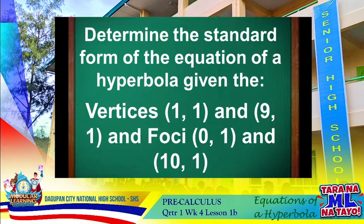Determine the standard form of the equation of the hyperbola given the coordinates of the vertices: (1, 1) and (9, 1), and the coordinates of the foci: (0, 1) and (10, 1). To find the equation, we need to determine the coordinates of the center, the transverse axis, and the conjugate axis.